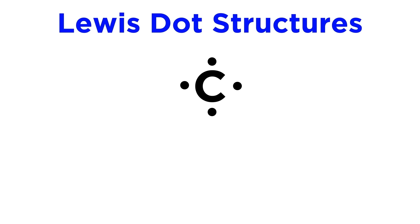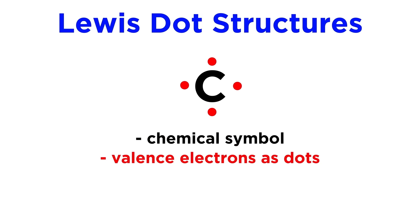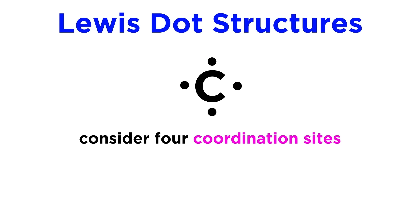A Lewis symbol will consist of an element's chemical symbol surrounded by some dots. These dots are the valence electrons of that atom. When we place these dots we typically will use four coordination sites, or basically the areas to the top, bottom, left, and right of the chemical symbol, and we will place one electron in each location before doubling them up, sort of like Hund's rule.